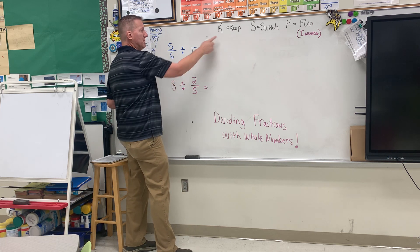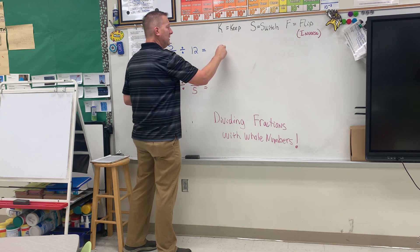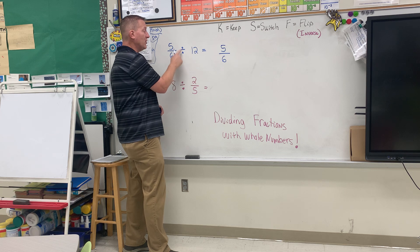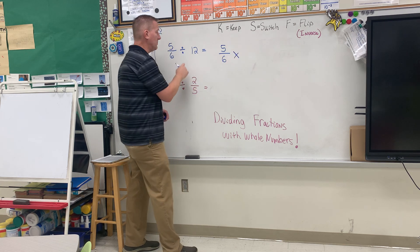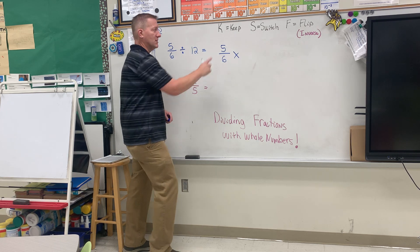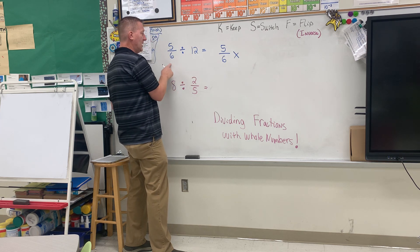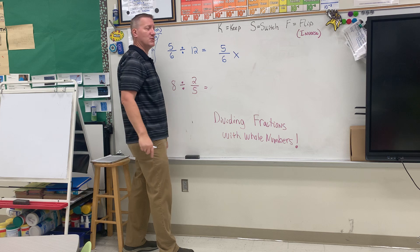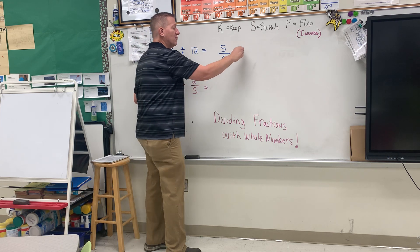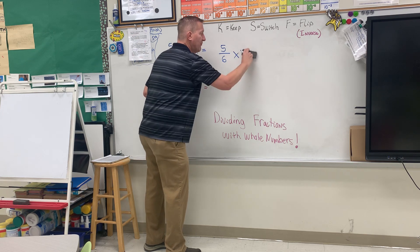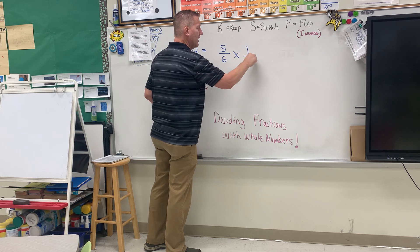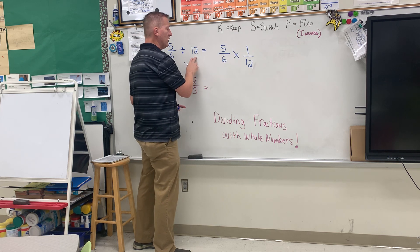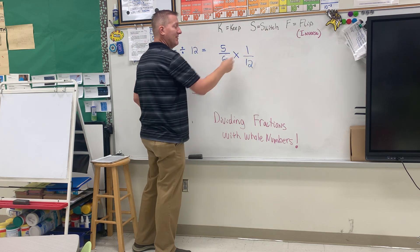Here's the first problem. Let's apply the keep switch flip. You're going to keep the five-sixths. You're going to switch the sign from division to multiplication. Keep the first fraction or the first number in the problem, then switch the sign, and then flip this 12. Now you have to be careful with this 12 because it's really 12 over one. So when you flip that — the inverse of it — it's one over 12.